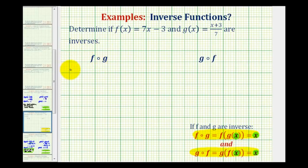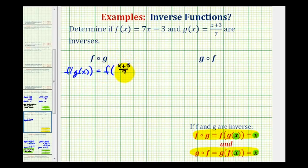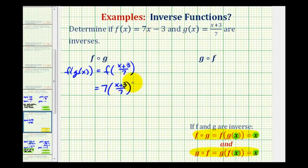So for f of g, we'll write f of g of x. And since g of x is the inner function, and g of x is equal to the quantity x plus three divided by seven, we'll have f of the quantity x plus three divided by seven. This will become the input into function f, where f of x equals seven times x minus three. So this would be equal to seven times the quantity x plus three divided by seven, minus three.